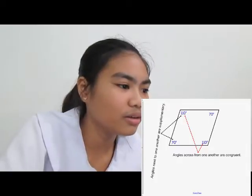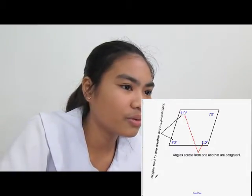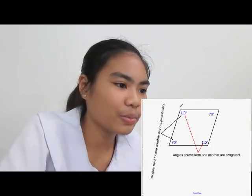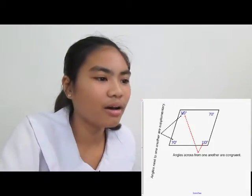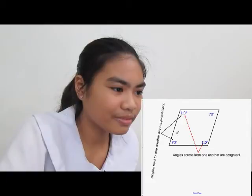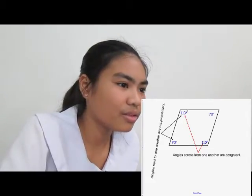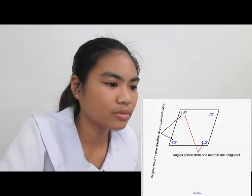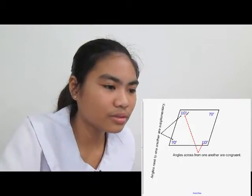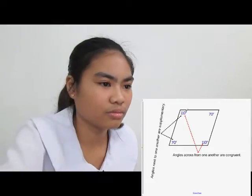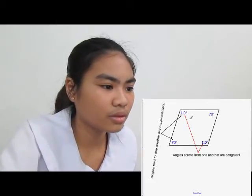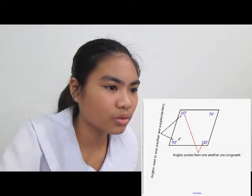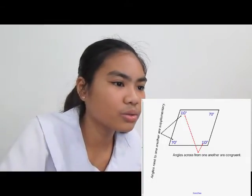In terms of the angles, the angles next to one another are supplementary. For example, these two angles would be 110 and 70 — they add up to 180. The angles across from one another are congruent, so the 70s match and the 110s match.